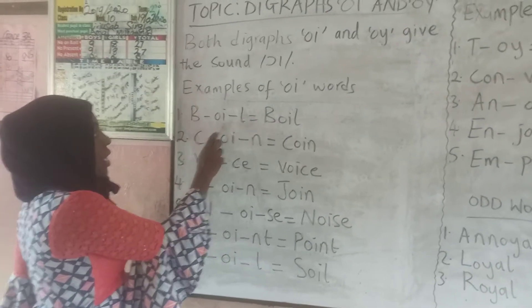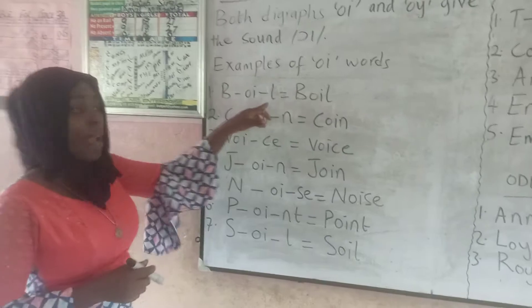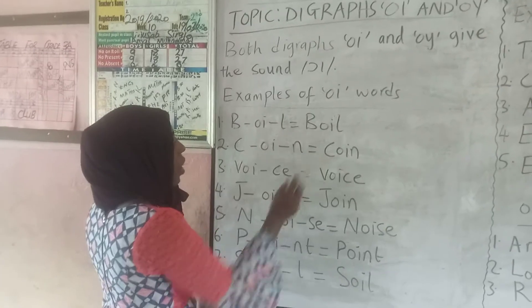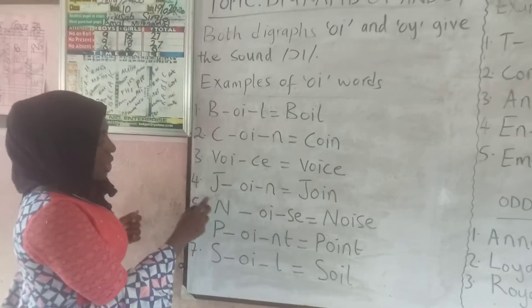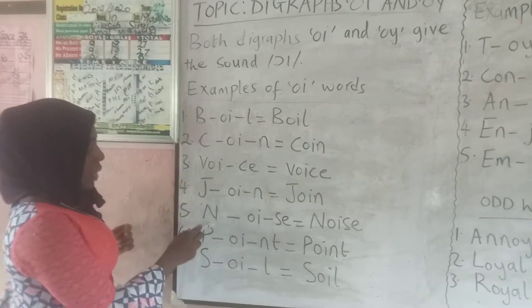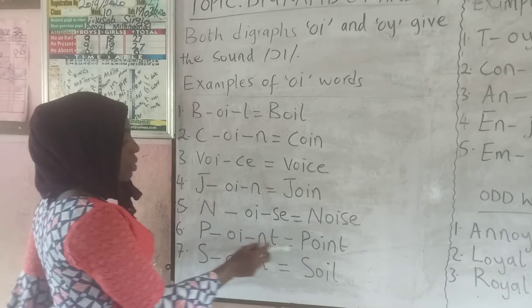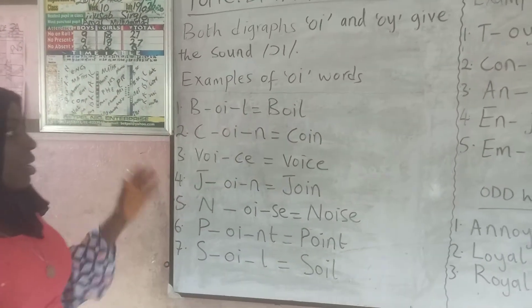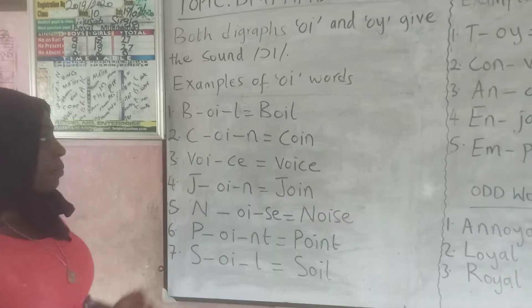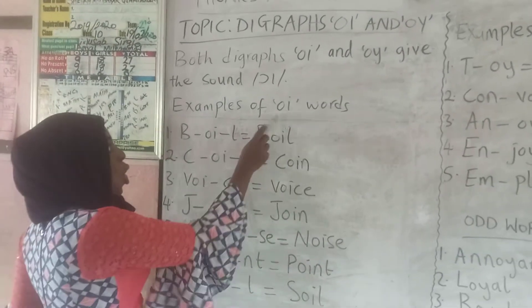We have B-O-I-L: boil. Where is the position of O-I? Is it at the end? No — it's in the middle of words. Likewise, N-O-I-S-E: noise. S-O-I-L: soil. You can see that in all of these words the sound O-I is not coming at the end of the word; it is in the middle. So for that reason we spell it using O-I.